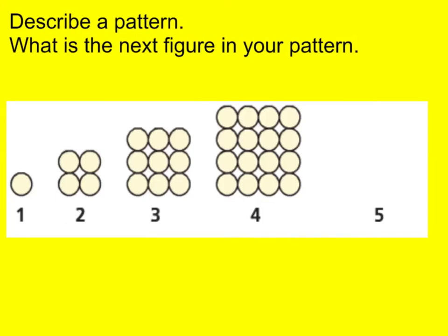Our next question says, describe a pattern. What is the next figure in your pattern? Figure 1 has one round circle. Figure 2 has four round circles. Figure 3 has three rows of circles. Figure 4 has this many circles. What would figure 5 be? That's our question. Pay close attention, if you're not sure, by counting how many are in each group. Or just think about some mathematical concepts we've talked about before. Go ahead and pause your video and draw your example.